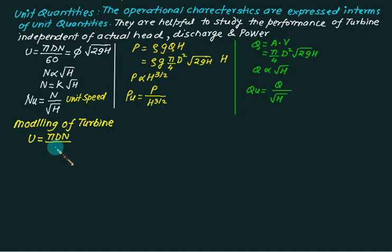So you have to use the same equation that is discussed just now. We have first equation is u equal to π dn by 60 is equal to ξ times under root 2gh. Since the model and prototype they are of different geometrical scale, so this time d will not get cancelled.